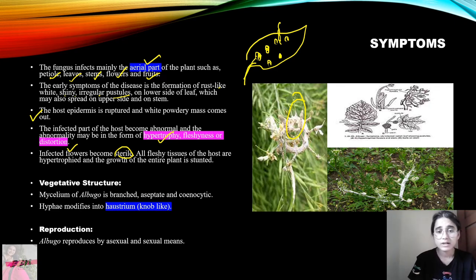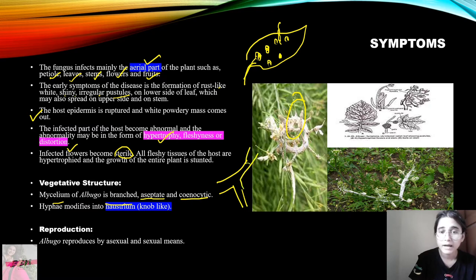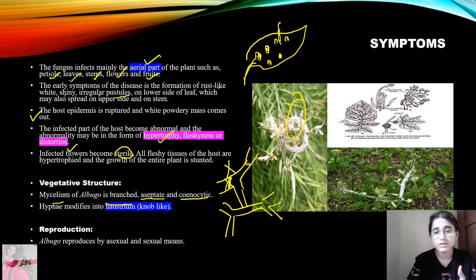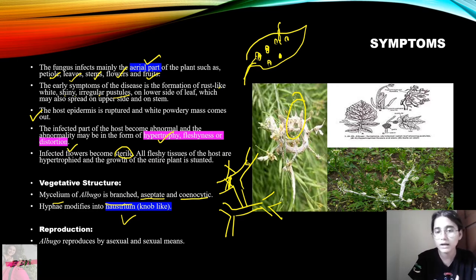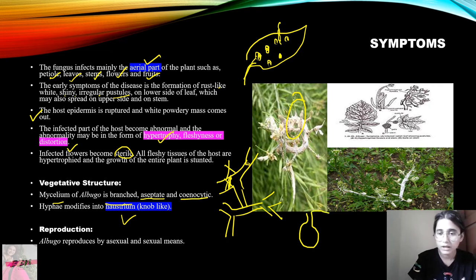Looking at the vegetative structure, the mycelium is branched and aseptate — aseptate means the septa are not present in the mycelium. The hyphae are modified into a haustorium. In Albugo, we can see finger-like haustoria.